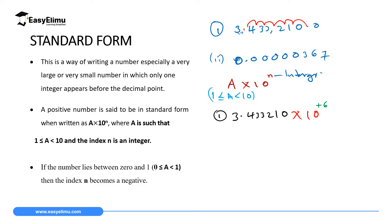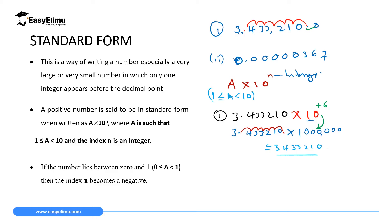If you want to go back to the original number from 3.433210 times 10 raised to power 6, you write 10 raised to 6 as 1 followed by 6 zeros. Those zeros shift the decimal point forward 1, 2, 3, 4, 5, 6 places, giving us back 3,433,210. As you can see, it resolves back to where it was.